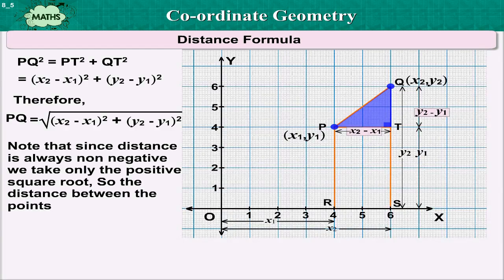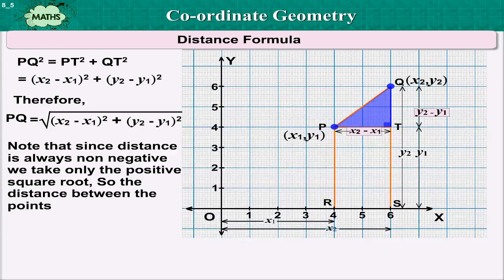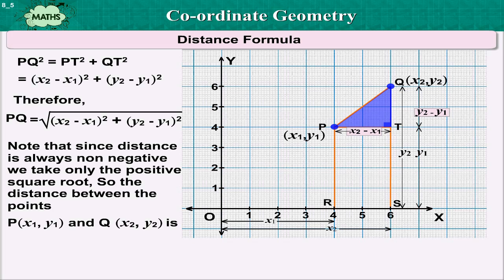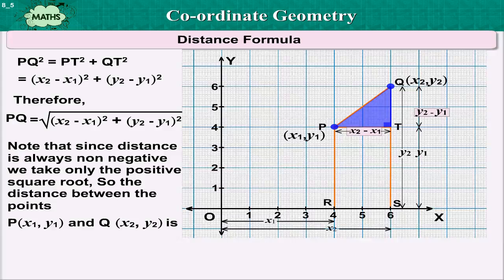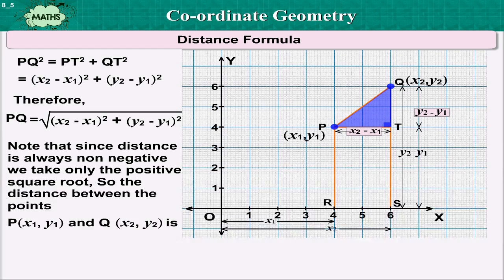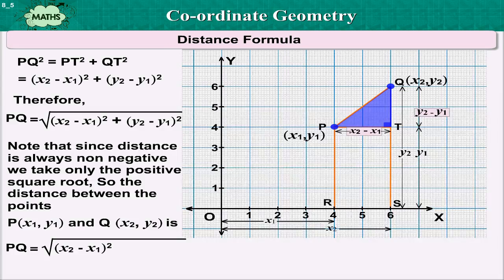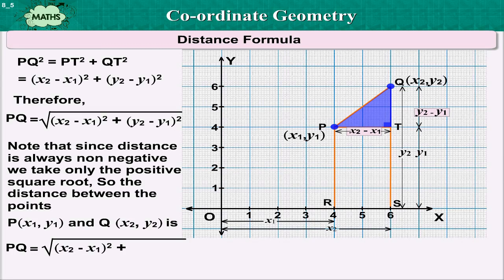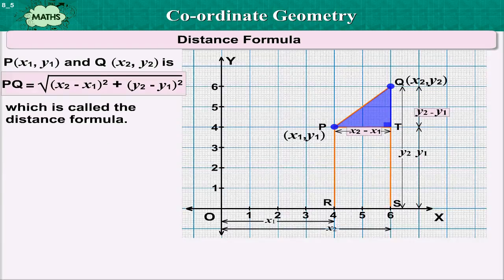Note that, since distance is always non-negative, we take only the positive square root. So, the distance between the points P and Q is equal to square root of x2 minus x1 the whole square plus y2 minus y1 the whole square which is called the distance formula.